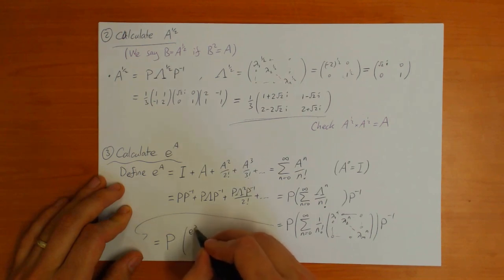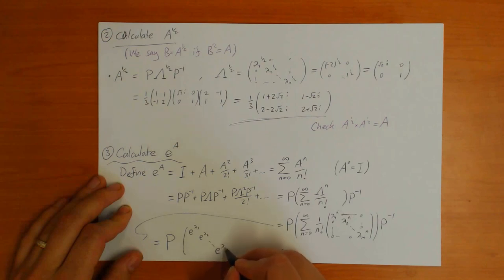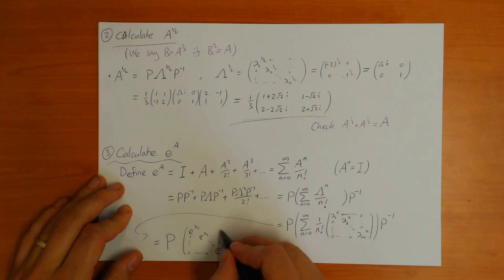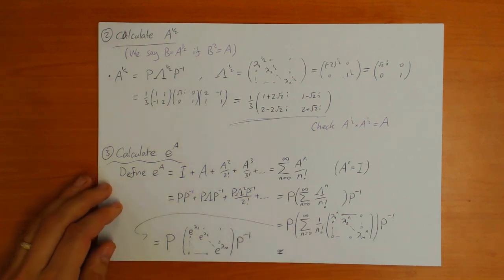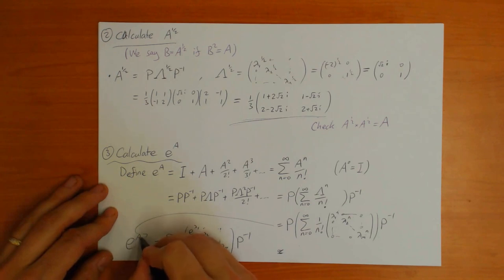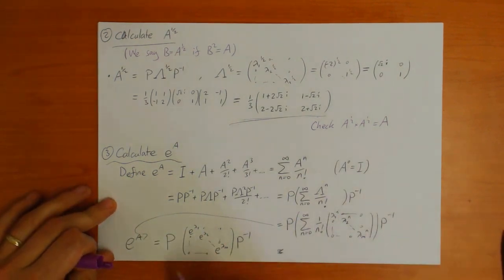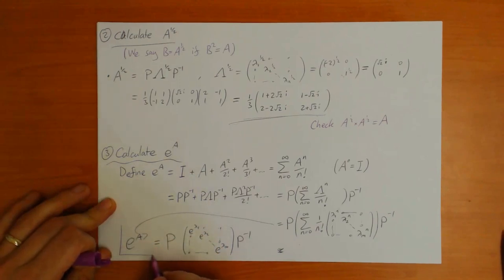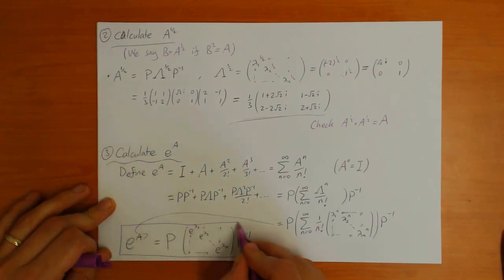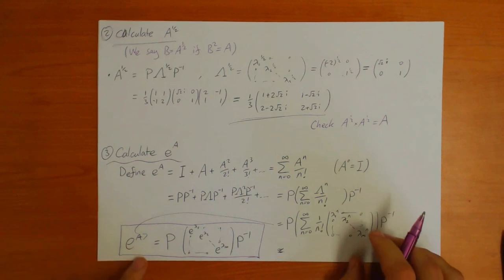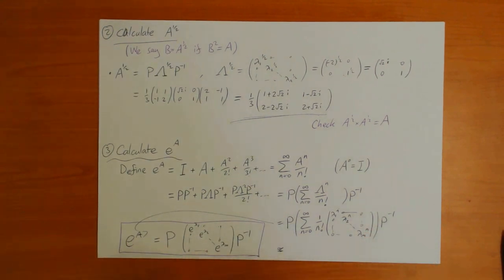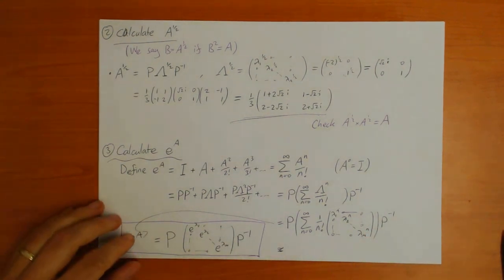So the matrix exponential e^A equals P times the diagonal matrix with e^(lambda-1), e^(lambda-2), up to e^(lambda-m) on the diagonal and zeros elsewhere, all times P-inverse. This is a nice formula which enables you to calculate the exponential of a matrix in a reasonable amount of time. We'll use this formula now in our example to see what the exponential of A is.